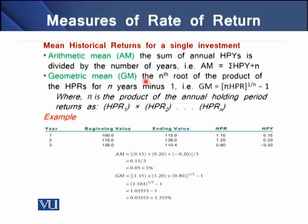To determine the geometric mean, we take the nth root of the product of the holding period returns for n years, then deduct one from that value. This means we compute the product of all holding period returns, raise it to the nth root, and subtract one.